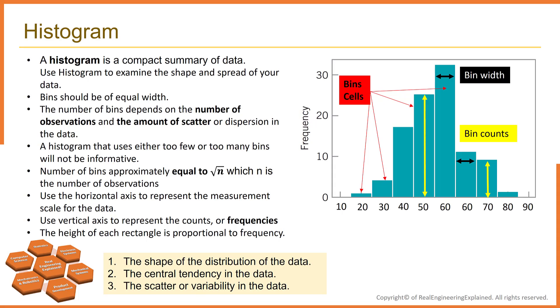The histogram gives us some information about the shape of the distribution of data, and also it gives us some information about the central tendency in the data and the scatter or variability in the data. These are the main information that we can get from the histogram.